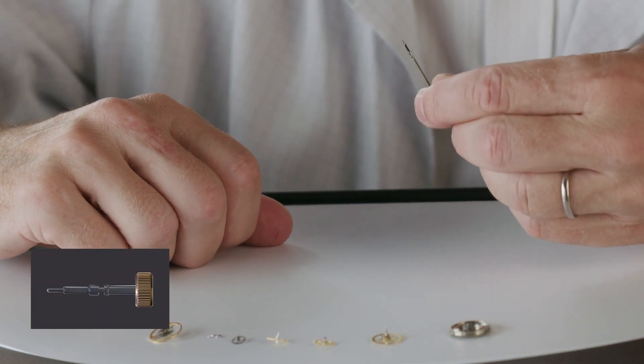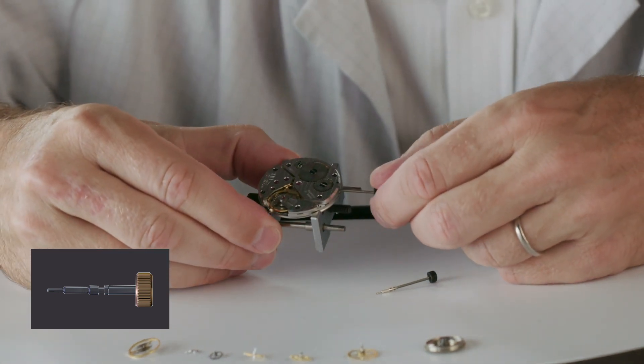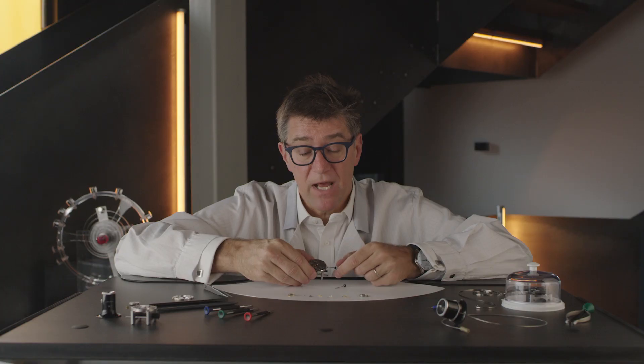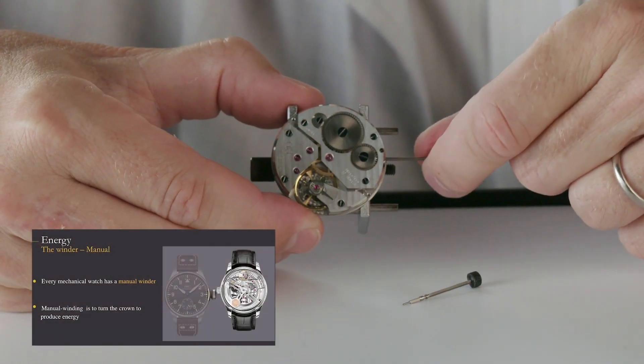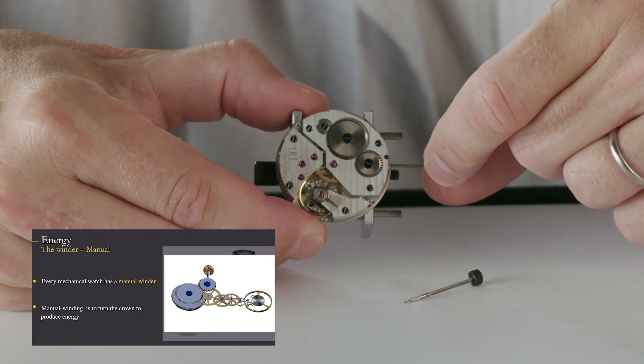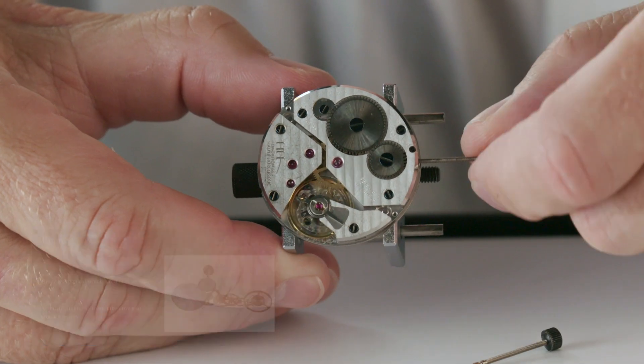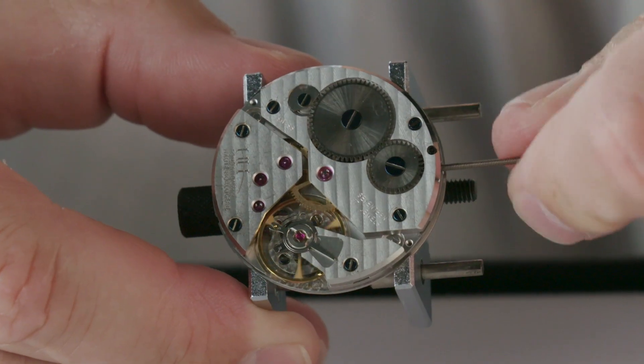By turning the crown with our fingers, we will wind the winding stem which winds up the mainspring in the barrel. Usually you wind it by turning the crown at least 20 or 30 times like I'm doing right now. One way it winds up, and the other way there is a clutch for your comfort.